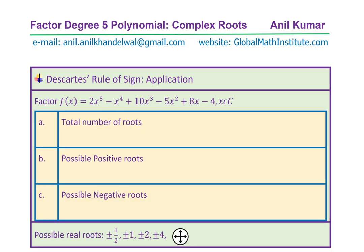Knowing Descartes' Rule helps us figure out which value to try first — that is the shortcut method. Our function is f(x) = 2x⁵ - x⁴ + 10x³ - 5x² + 8x - 4, where x belongs to complex numbers.